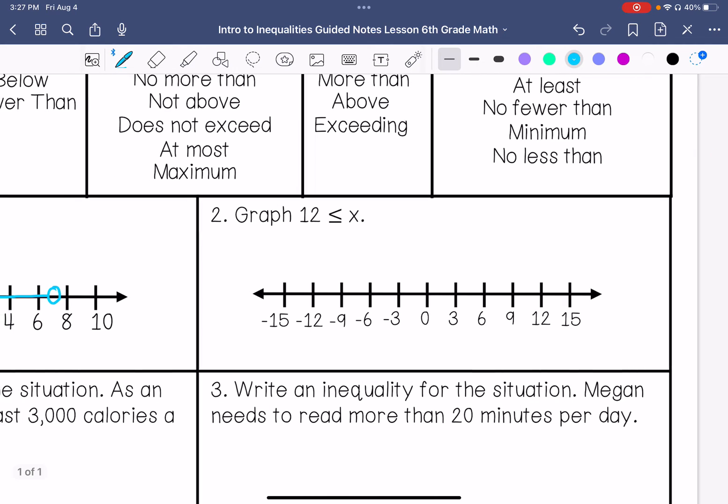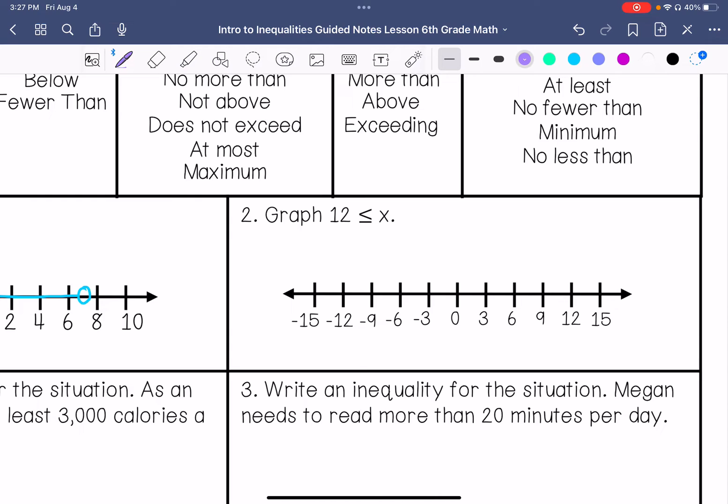Number 2, 12 is less than or equal to x. I'm going to rewrite this as x is greater than or equal to 12. So I'm going to put a closed circle, and then it's equal to and greater than, so this direction.